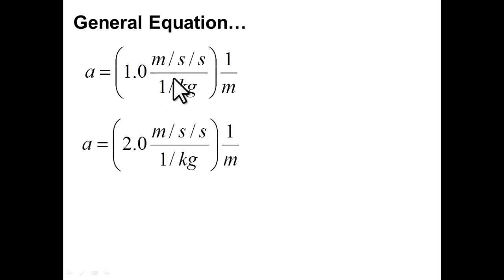So, the equations that our groups got was either this: acceleration is equal to one something, all these crazy units mean something, times one over mass, or acceleration is equal to two times one over mass. Now, in order for us to figure out what the slope means, we're going to have to simplify all these crazy units.